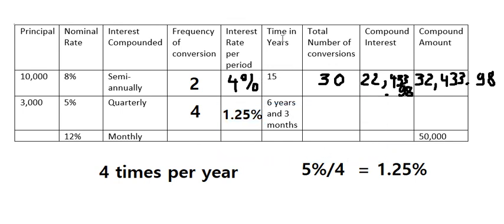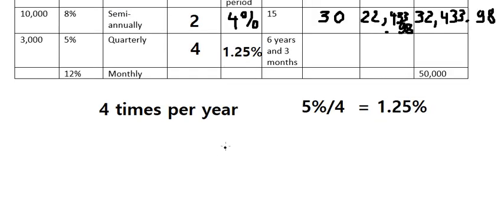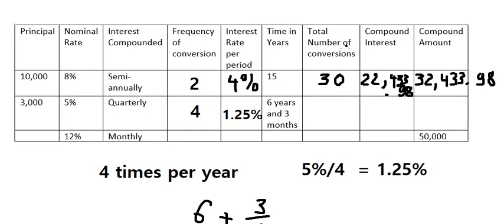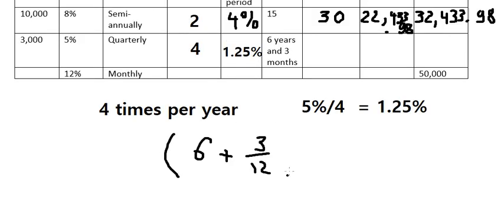The time is 6 years and 3 months. We convert 3 months to 3 over 12, which equals 0.25 years, giving a total of 6.25 years. For total number of conversions, we multiply 6.25 by 4 and get 25. We put 25 here.